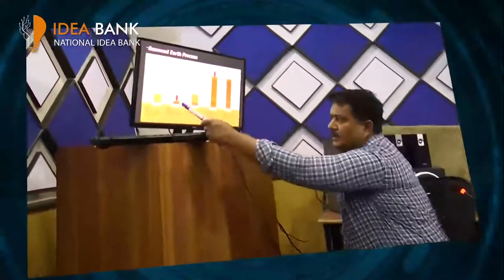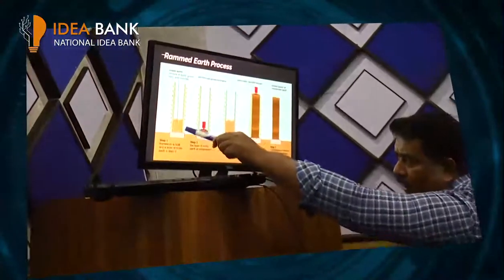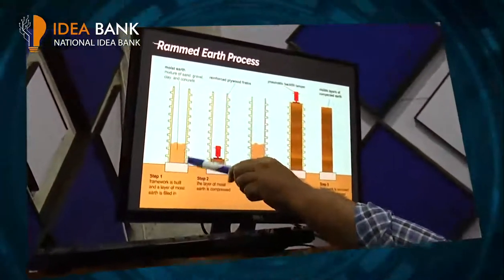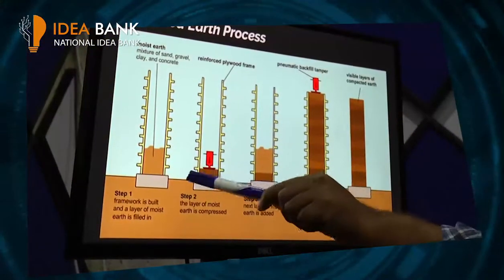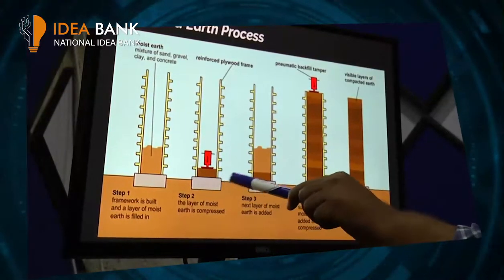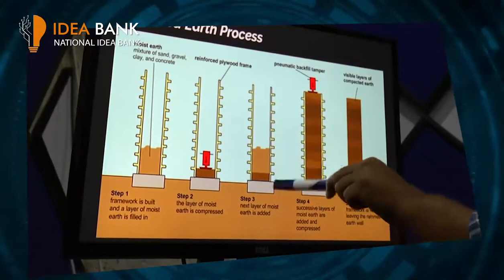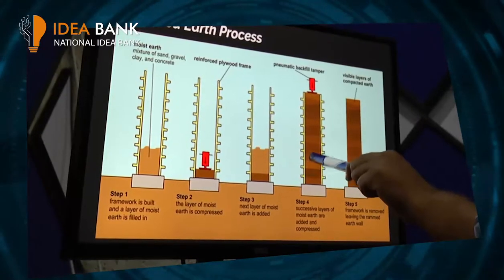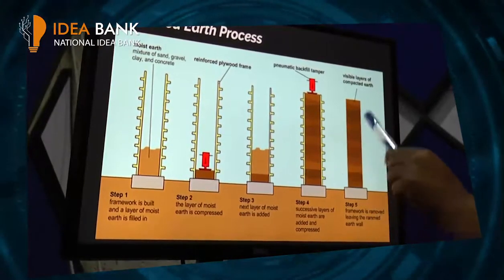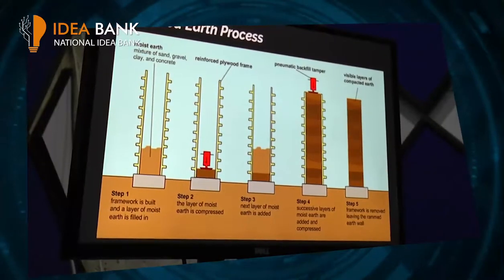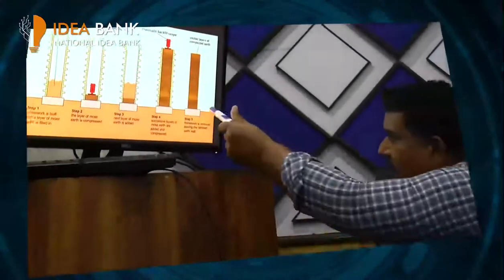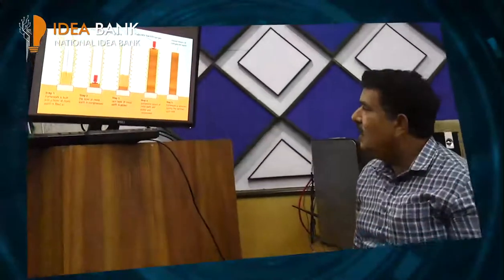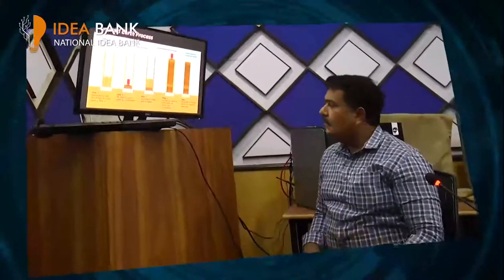آئیے میں آپ کو اس طریقہ کار کے بارے میں وضاحت دیتا ہوں۔ یہ اس کا پہلا پروسس ہے — اس کے اندر ہم ایک فارم ورک لگاتے ہیں۔ فارم ورک کے اندر ہم مٹی اور دیگر ایڈیٹوز ڈالتے ہیں اور انہیں ریم کرتے ہیں۔ ریم کرنے کے بعد اس کی سطح تقریباً ون تھرڈ یا ون فور تک پہنچ جاتی ہے۔ پھر ہم اسی کے اوپر ایک اور لیئر دیتے ہیں، لیئر بائی لیئر ریم کرتے رہتے ہیں، فارم ورک ریموو کرتے ہیں — اور ہمیں ایک دیوار حاصل ہو جاتی ہے جس میں نہ سریا استعمال ہوا، نہ سیمنٹ، اور نہ اینٹیں یا بلوکس۔